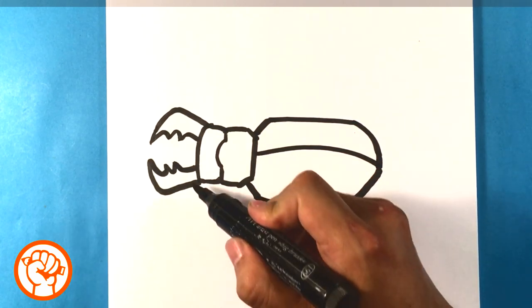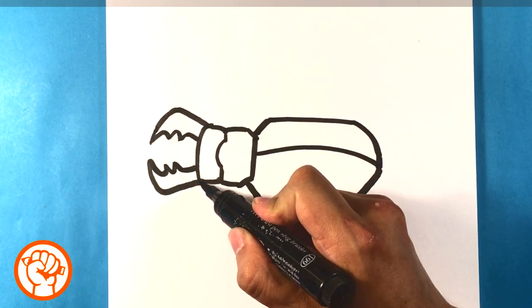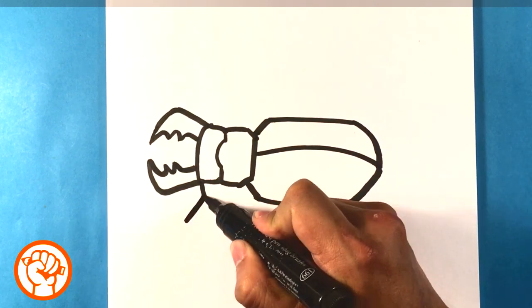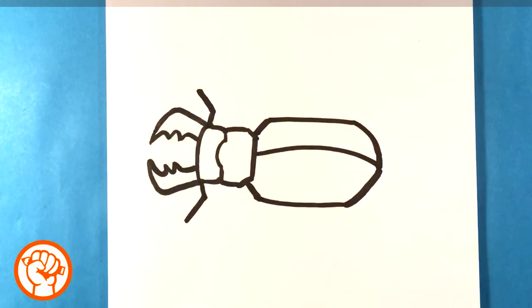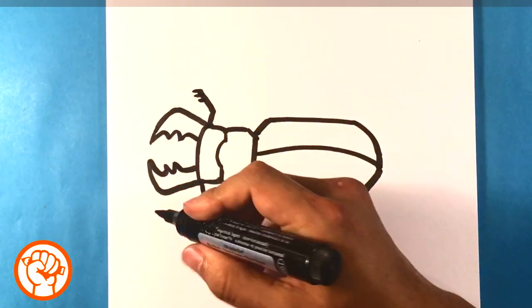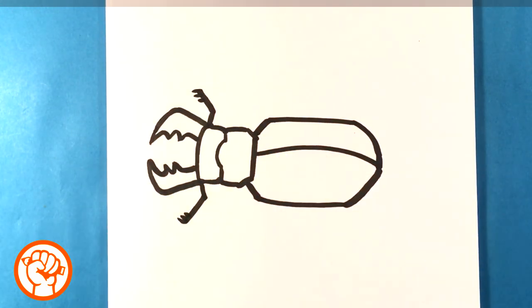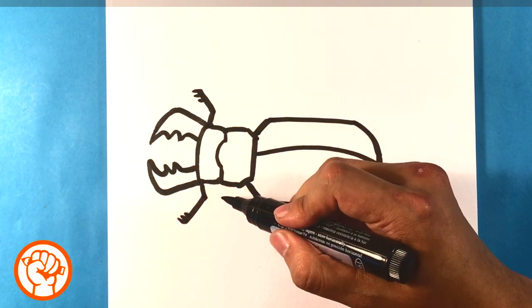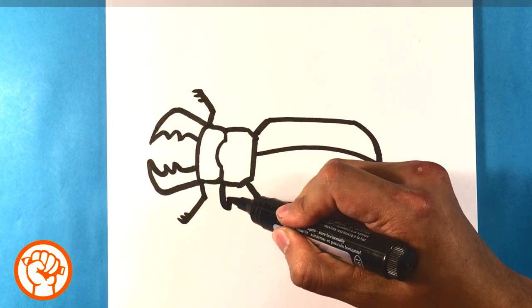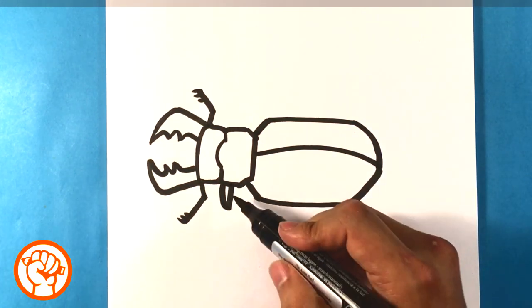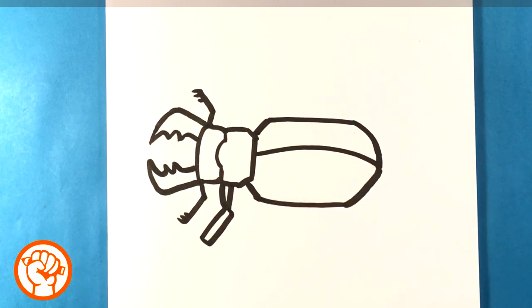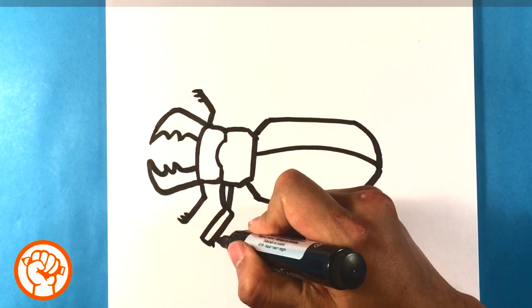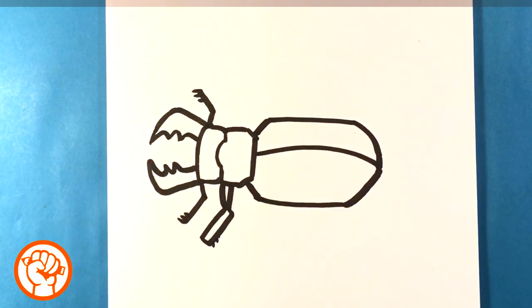And now all we have to do is draw the legs. And it's really simple. Let's draw the front ones. Draw a straight line. Draw another straight line out. And then throw a little spikes at the end of it. Like maybe three or four.